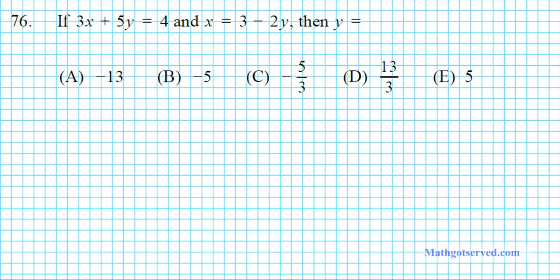Let's take a look at question number 76. It says: if 3x plus 5y equals 4, and x equals 3 minus 2y, then y equals. This is a system of equations problem. We have two equations, so we have a system of two equations and two variables, namely x and y. So let's set up our system: we have 3x plus 5y equals 4, and the other equation x equals 3 minus 2y.